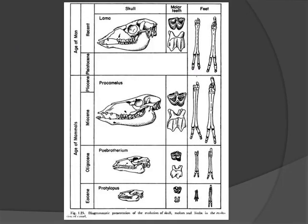This diagrammatic presentation is a summary of the evolution of camel. You can see a gradual increase in length of the limbs, reduction in toes, increase in height of the crown, and enlargement of the skull from primitive to recent forms.